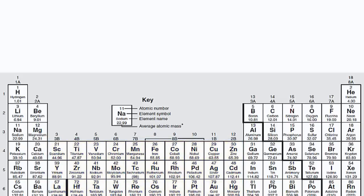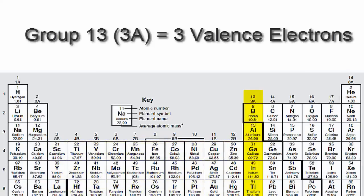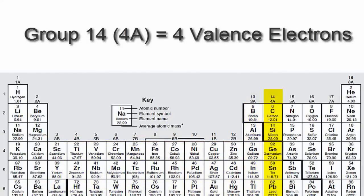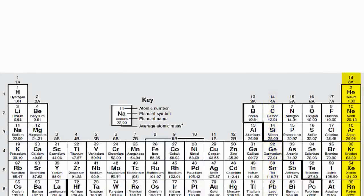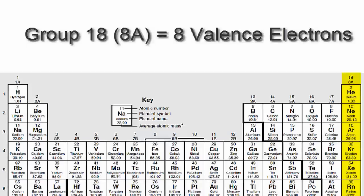We'll go to 13 or 3A, which have three valence electrons, then 14 or 4A. Each of those elements in group 14 or 4A have four valence electrons, all the way up to group 18 or 8A, which have eight valence electrons.